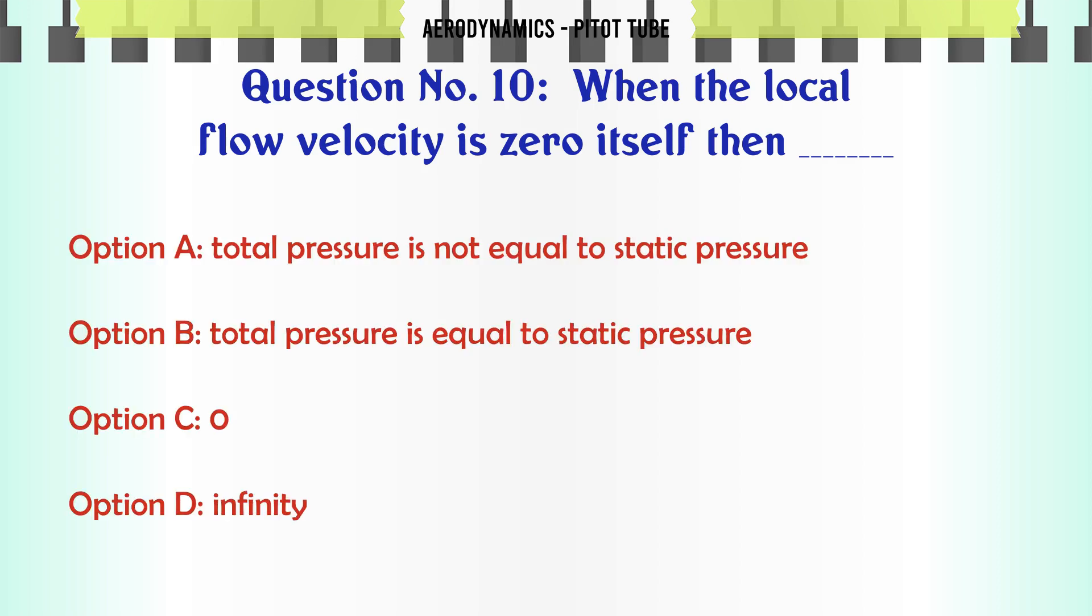When the local flow velocity is zero itself then: A. Total pressure is not equal to static pressure, B. Total pressure is equal to static pressure, C. Zero. The correct answer is B.